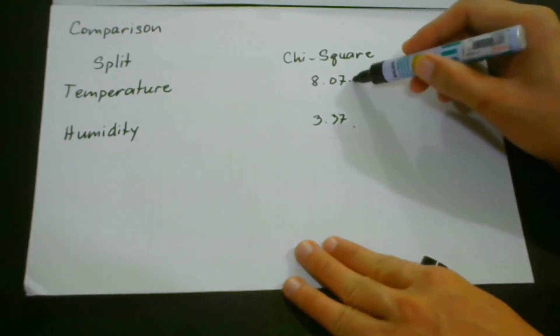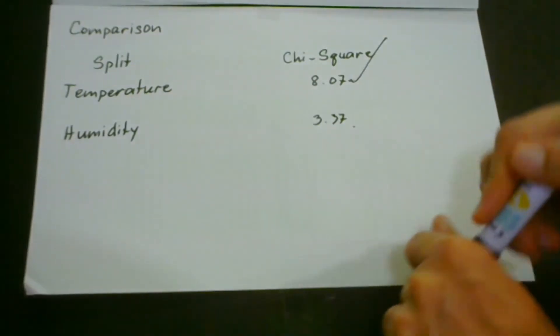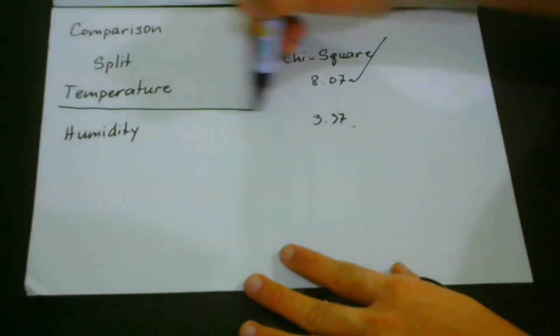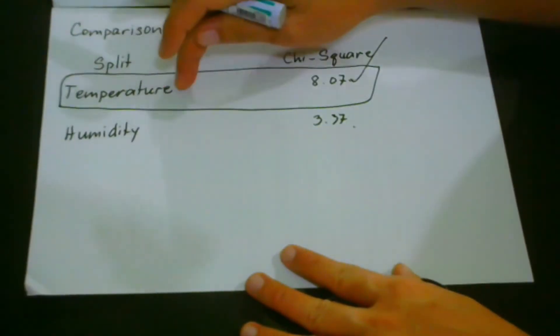Which means to say that the split on temperature is more homogeneous than the split, which means to say that we're going to use the split on temperature as our first split for our decision tree.